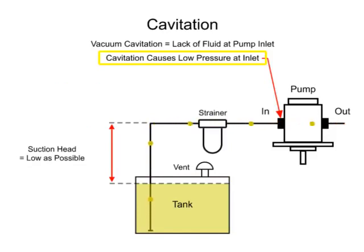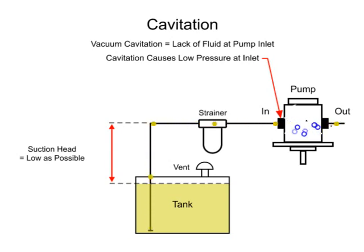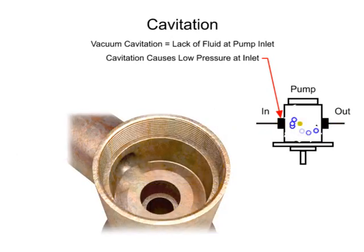Cavitation causes a drop in pressure at the pump inlet. When the pressure at the pump inlet drops below the vapor pressure of the liquid, vapor bubbles form and the fluid appears to boil. When the bubbles collapse, they can damage the pump by removing small pieces of metal. This is called pitting and can cause permanent damage to the pump.